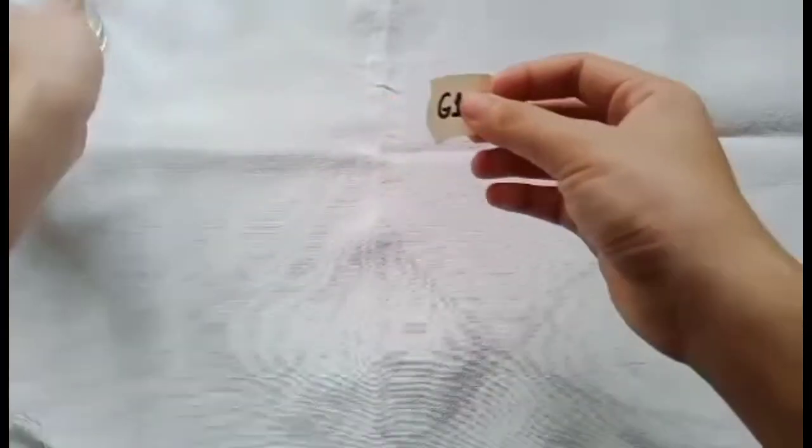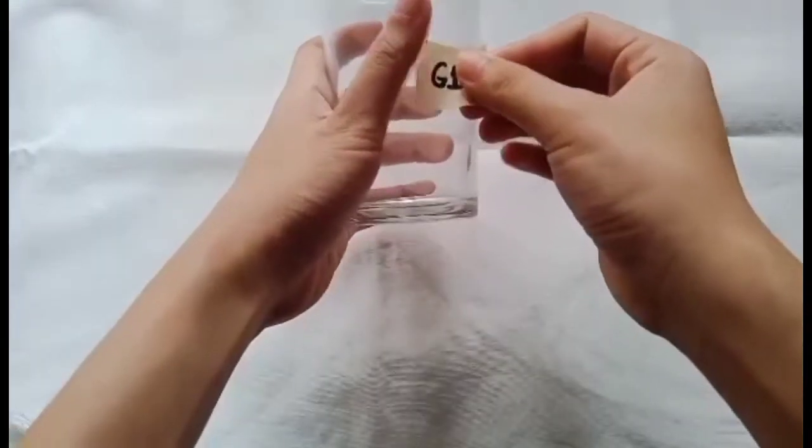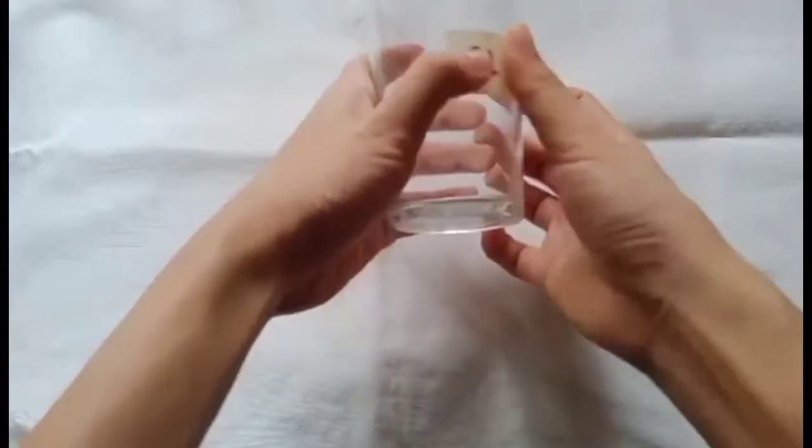Procedure: First, label the clean, dry, clear glass with a labeling or masking tape for you to easily identify the setups.